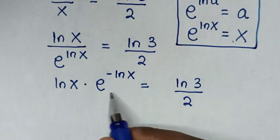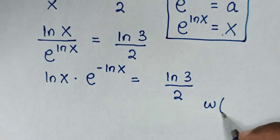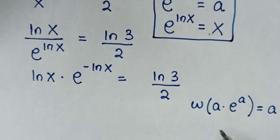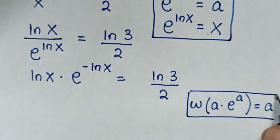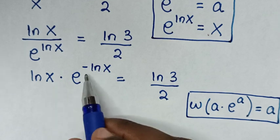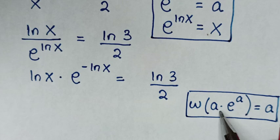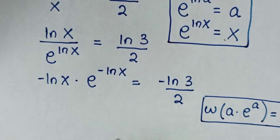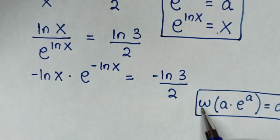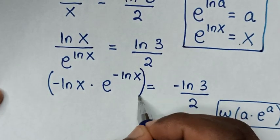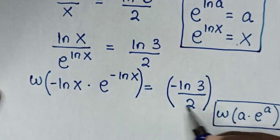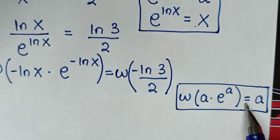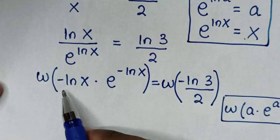Then in the next step, we will apply the Lambert W function, which states that W(a·e^a) is equal to a. From our equation, we have ln(x)·e to the power of negative ln(x). We need the power to match the base, but negative ln(x) versus positive ln(x), so we apply negative to both sides. Then we apply W to both sides.